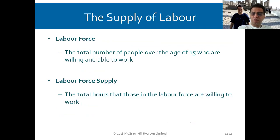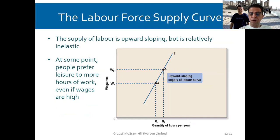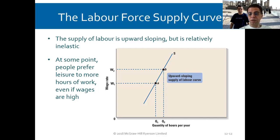The supply of labor: the labor force is the total number of people over the age of 15 who are willing and able to work. The labor force supply is the total hours those in the labor force are willing to work. The labor supply curve is upward sloping but relatively inelastic, because at some point people prefer leisure over more hours of work, even if wages are high.